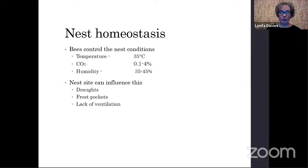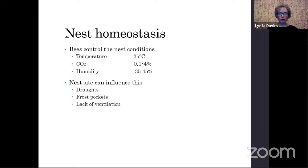The temperature maintained in the brood nest is 35 degrees centigrade. CO2 levels need to be below 4%, and humidity tends to be around 35 to 45% — optimum for brood rearing. You don't want the young larvae to dry out, and equally you don't want very high humidity which may favour some diseases. The nest site can influence the conditions — whether there are lots of drafts or if there's a frost pocket, lack of ventilation. To a certain extent the bees will control this themselves — for example, some colonies will propolise the entrance to regulate the amount of air coming in and out, particularly in very drafty areas.